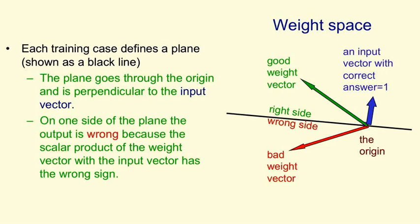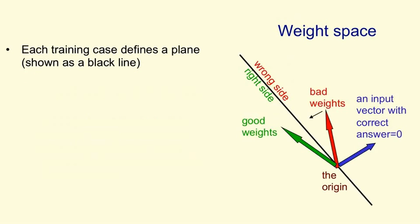Now let's look at a different training case in which the correct answer is 0. So here we have the weight space again. We've chosen a different input vector. And for this input vector, the right answer is 0. So again, the input case corresponds to a plane shown by the black line. And in this case, any weight vectors that make an angle of less than 90 degrees with the input vector will give us a positive scalar product, and so they'll cause the perceptron to say yes or 1, and it will get the answer wrong.